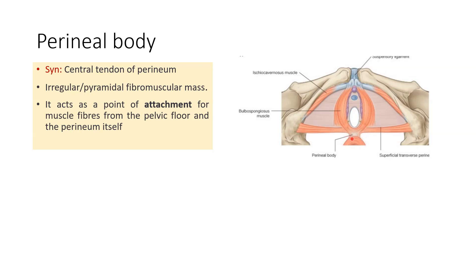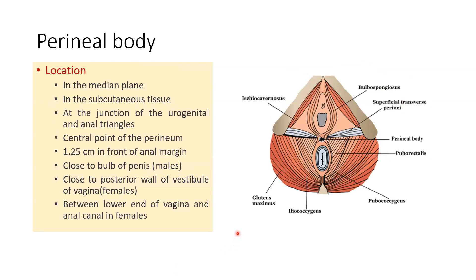Here you are seeing the attachment of muscles of the perineum, and posterior to this you are seeing part of the anal opening with the external sphincter muscle fibers surrounding it. The perineal body is located in the midline, subcutaneous, at the junction of the urogenital triangle and anal triangle — it is the central point of the perineum. It is about 1.25 centimeters in front of the anal margin.